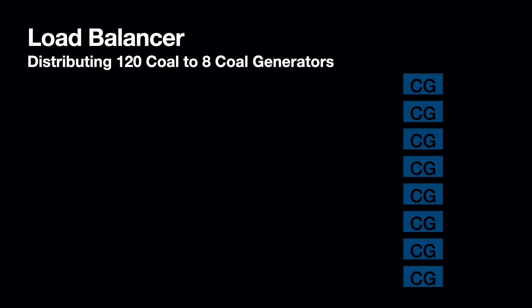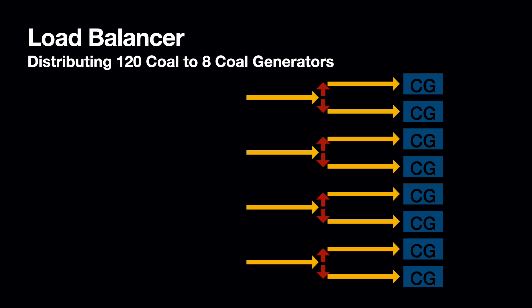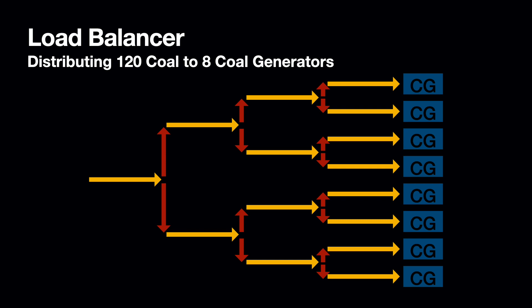The load balancer, on the other hand, distributes the raw materials equally before feeding them to the machines. You line up your machines but this time each machine has its own conveyor belt. You work your way up: eight belts come from splitting four, four come from splitting two, and two comes from splitting one. The good thing is it ensures all machines get the same number of ingredients from the get-go. The bad thing is it's tricky to build and can really only work for multiplications of twos and threes because splitters split to either two or three.